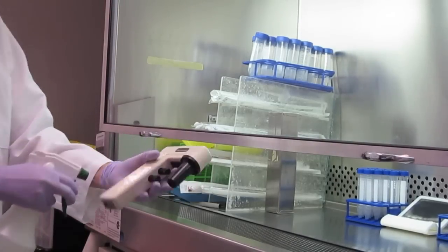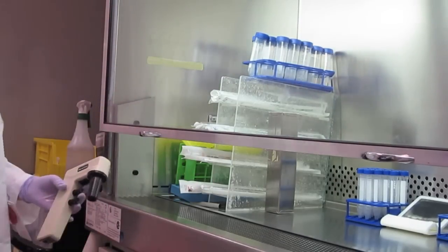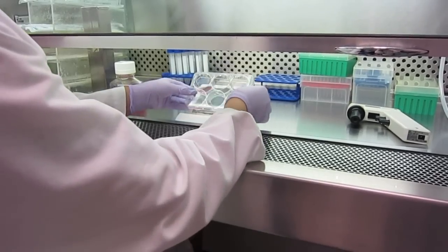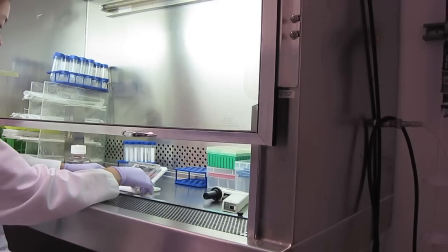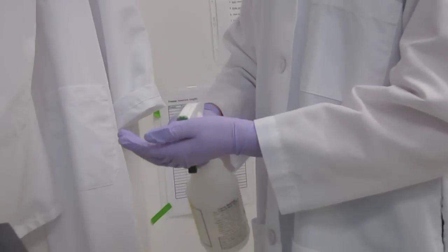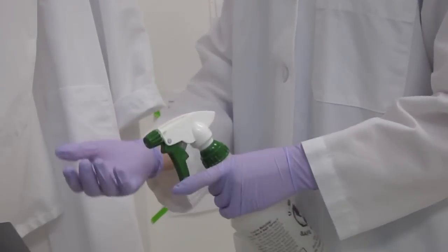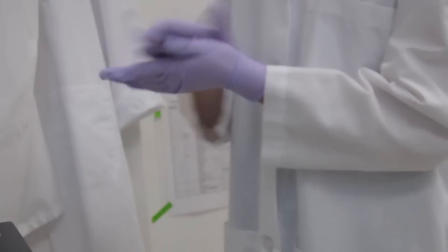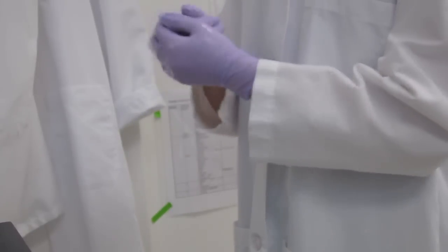Additionally, spray all items going into the BSC with 70% ethanol. Do all work 4 inches into the BSC and avoid leaving anything on the grill. Make sure you spray down your gloves every time before your hands enter the BSC, especially after touching something that may have been contaminated.